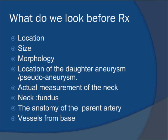What do we assess before planning therapy for aneurysms? First, we look at the location. Second, we look at the size. Third, the morphology. By morphology, we assess whether there are multiple lobes and where exactly the pseudoaneurysm or daughter aneurysm component is located, so we try hard not to push against that region.